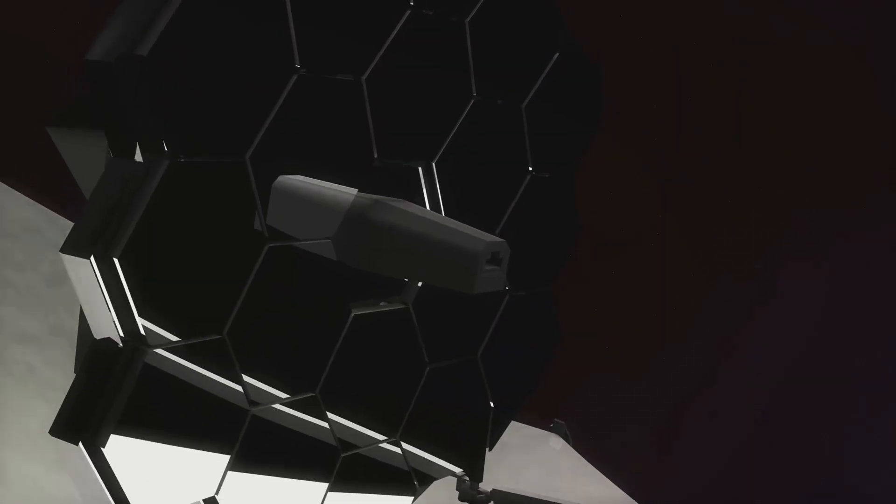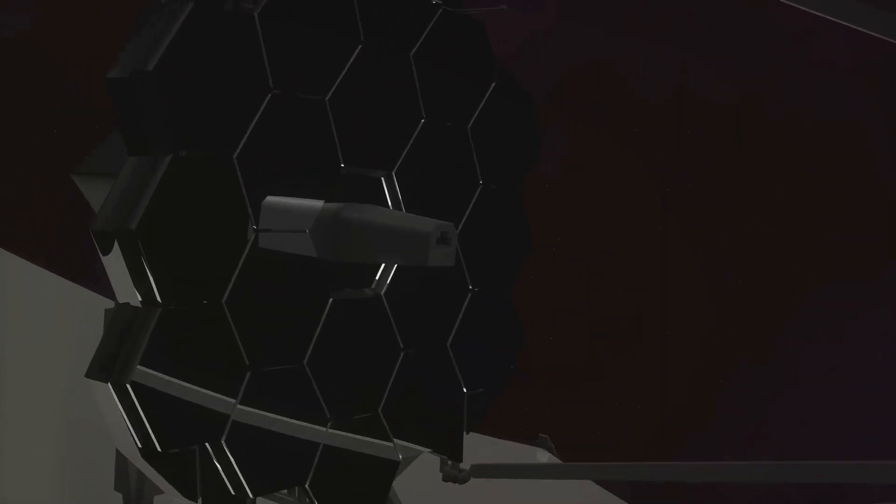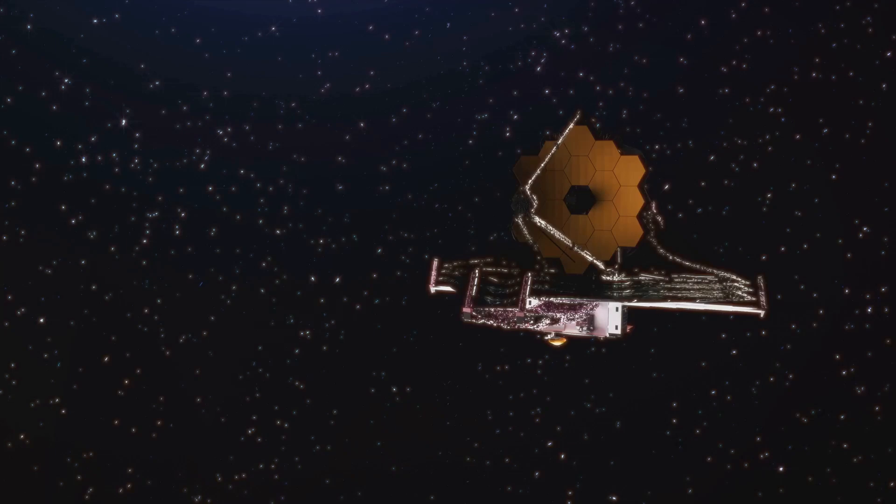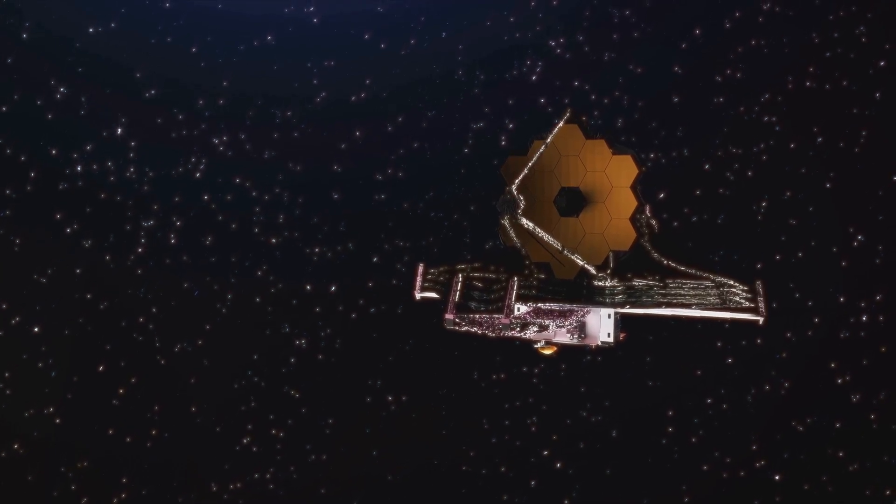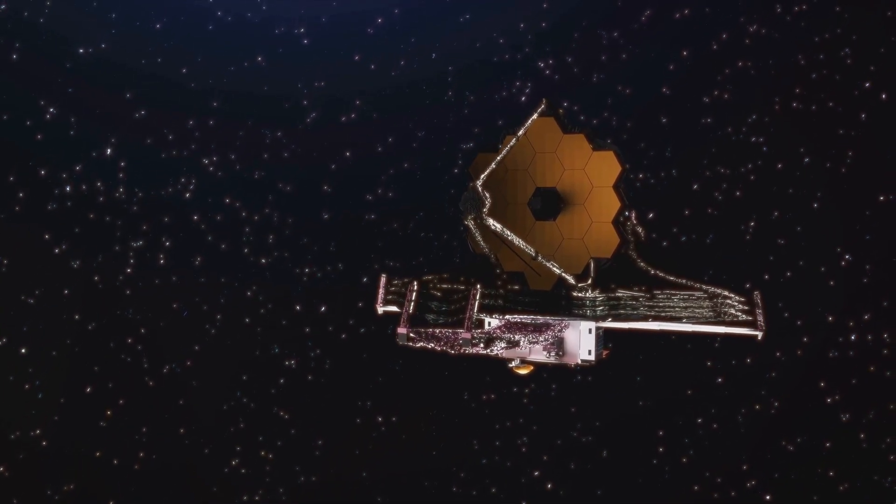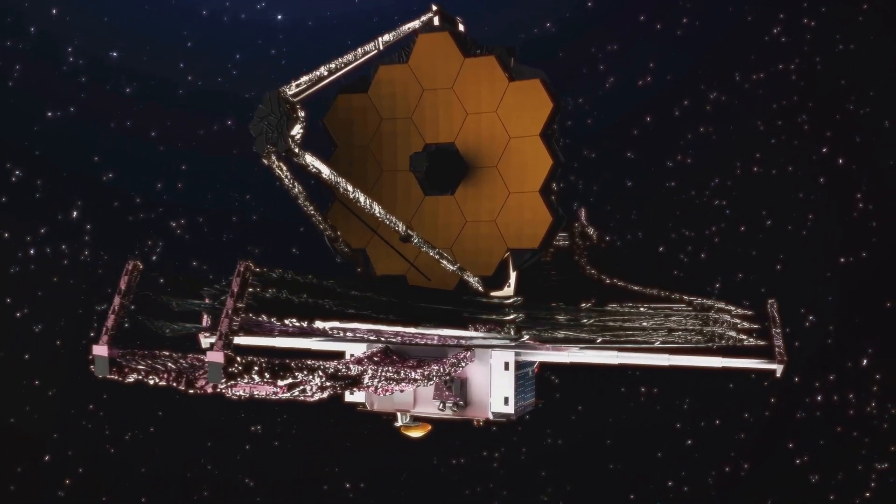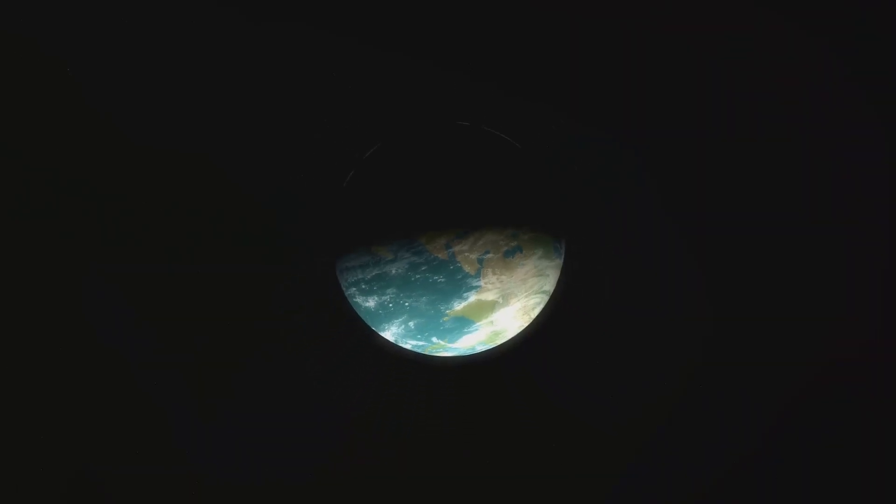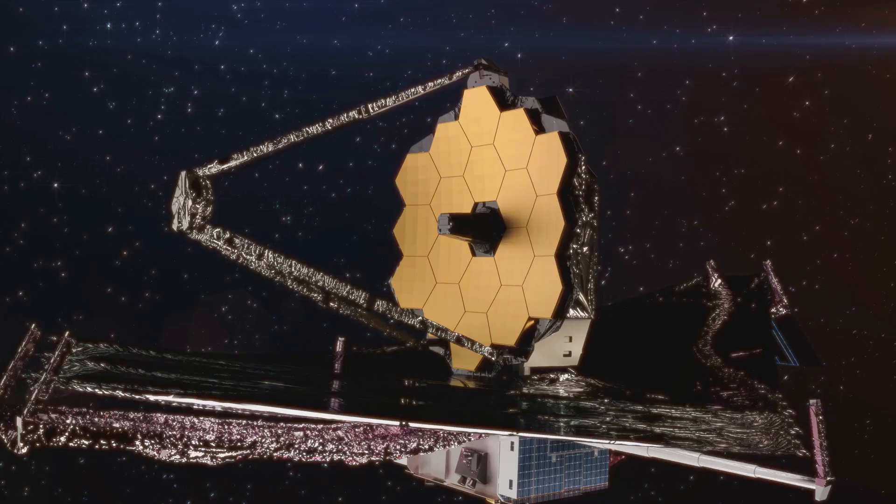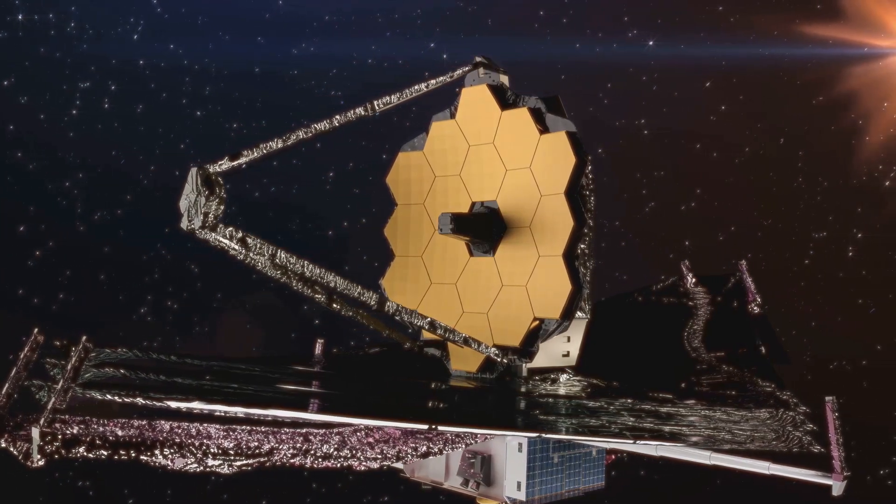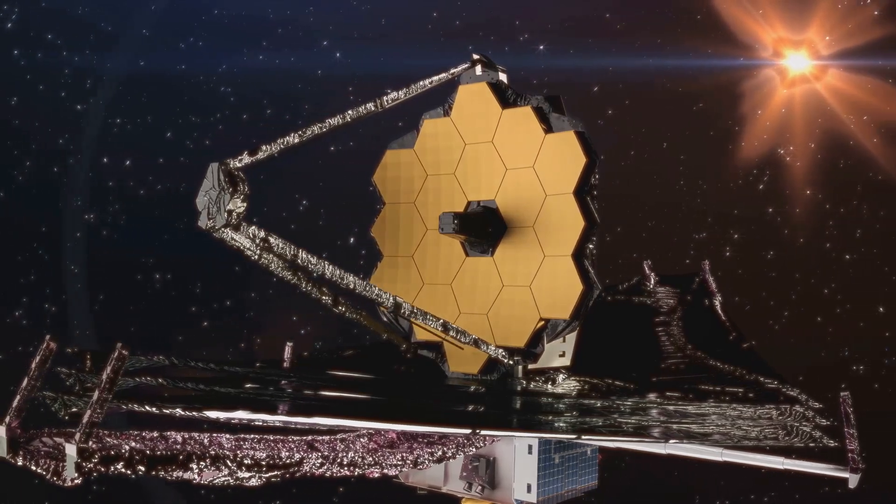The telescope is named after James Webb, NASA's second administrator, who played a crucial role in the Apollo moon landing program. Despite some controversy over the name, NASA chose to honor Webb's significant contributions to space exploration. The JWST is not just a telescope, it's a time machine. It's designed to look back over 13 billion years to see the first galaxies that formed after the Big Bang. By studying these ancient light sources, we can learn about the early universe and how it evolved into the cosmos we see today.